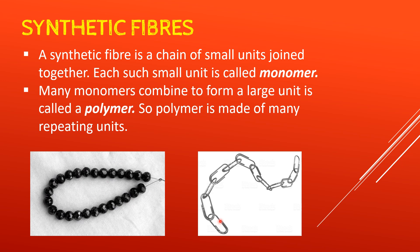A synthetic fiber is a chain of small units joined together. Each such small unit is called a monomer. The long chain consists of many small units, and when many monomers combine to form a large unit, that is called a polymer. A polymer is made of many many repeating units — just like each bead repeating in the necklace or each paper clip repeating in the chain.